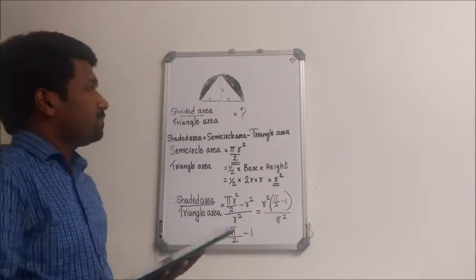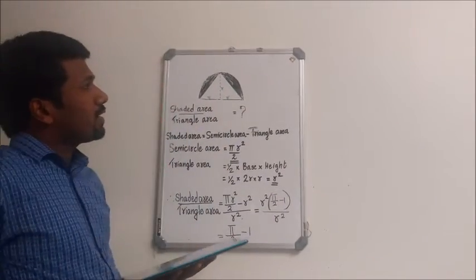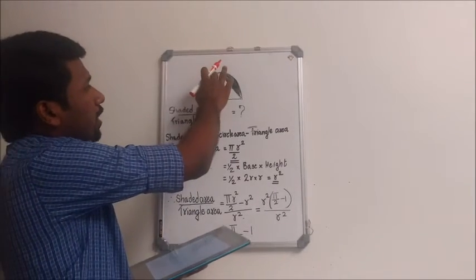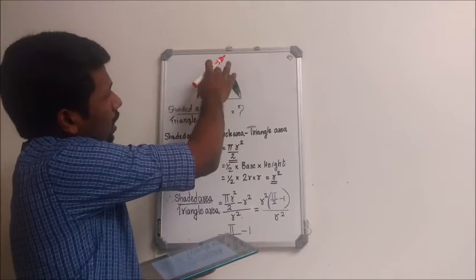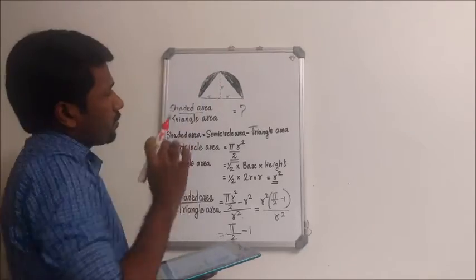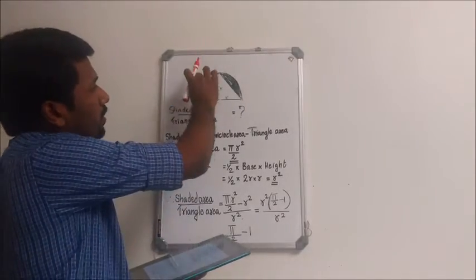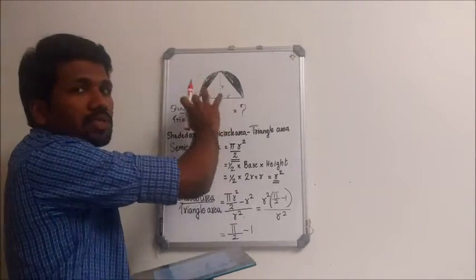This is the given figure. First, you have to note that the triangle obtained by joining the midpoints of the arc of the semicircle to the diameter of the semicircle, together with the shaded region, form the semicircle itself.